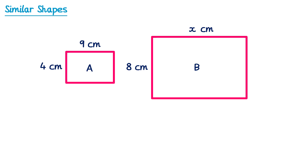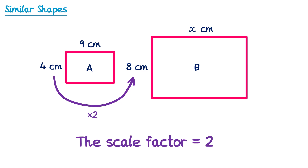We have the height of both rectangles. To get from the height of 4 to the height of 8, I've multiplied by 2, so the scale factor of enlargement is 2. To get from the width of 9 to the missing value I must also multiply by 2 if these shapes are similar. 9 multiplied by 2 is 18, so the missing width is 18cm.